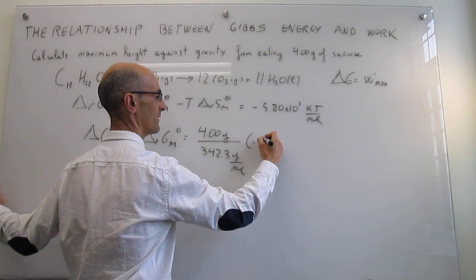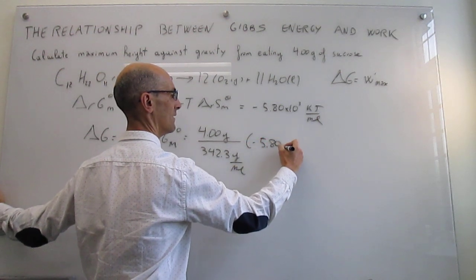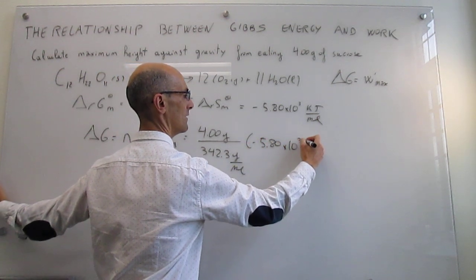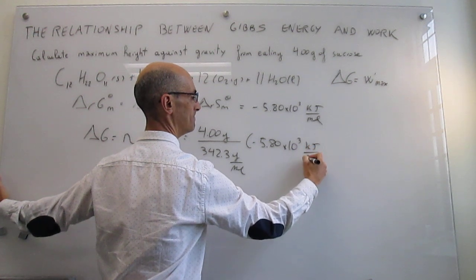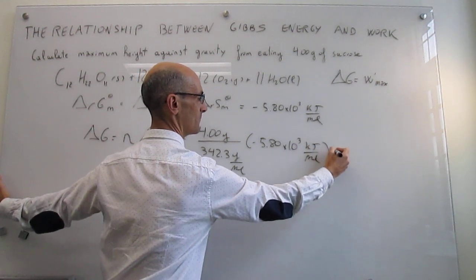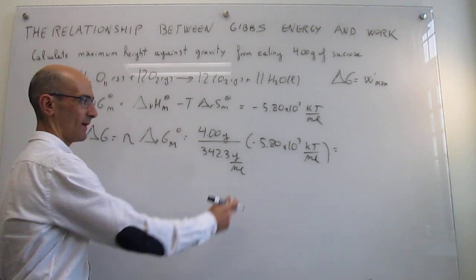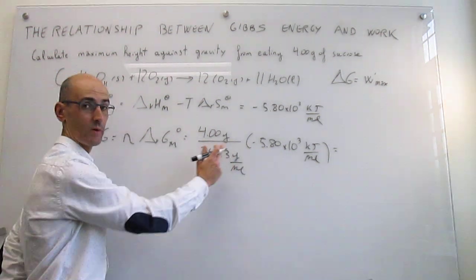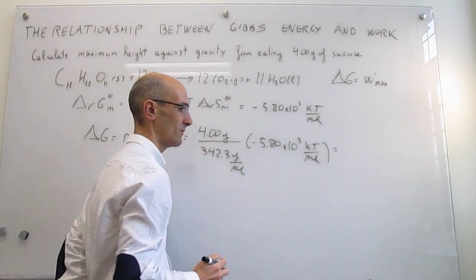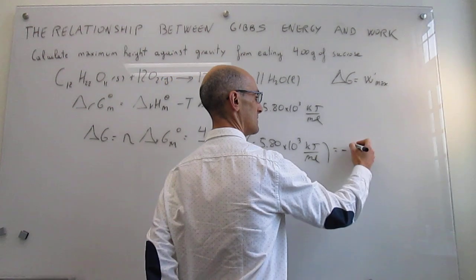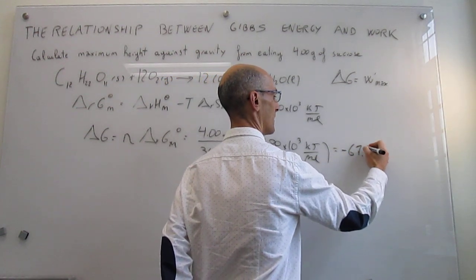Multiplied by minus 5.80 times 10³ kilojoules per mole. This returns a value that is going to be much smaller than this because you have much less than one mole, and that value happens to be minus 67.8 kilojoules.